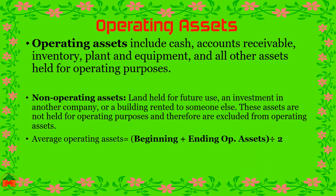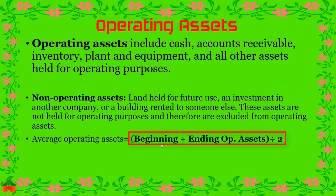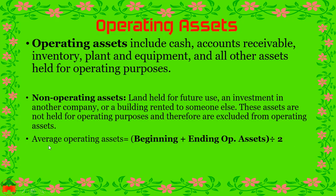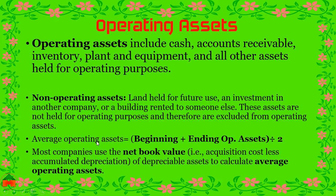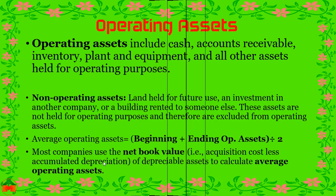Average operating assets are calculated by adding beginning operating assets and ending operating assets, then dividing by two. When taking the operating assets value, we should use the net book value — that is, acquisition cost less accumulated depreciation.